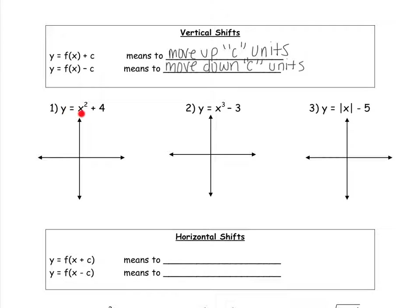Example one says y equals x squared plus four. x squared is your f of x and you're adding four to it. Example two has x to the third and we're subtracting three, so your f of x is x to the third. And in number three, we have the absolute value of x minus five, so the function is your absolute value function. So this first one is quadratic, the second one is cubic, and the third one is absolute value.